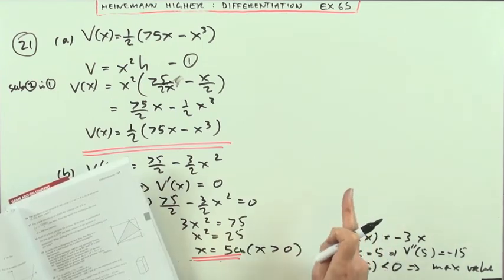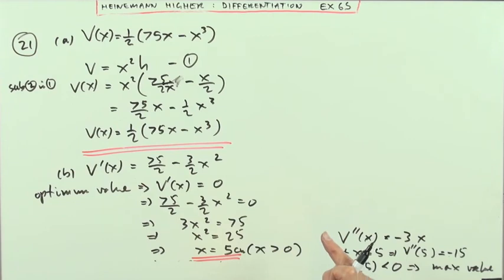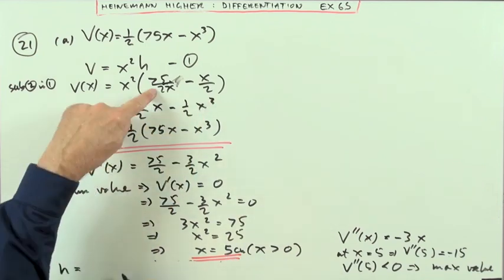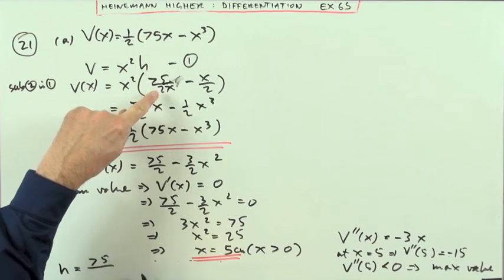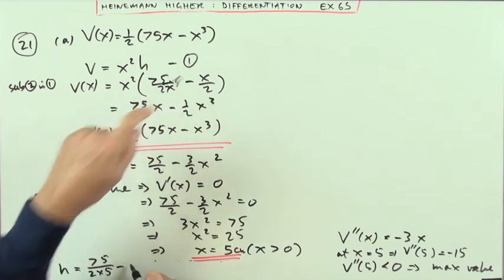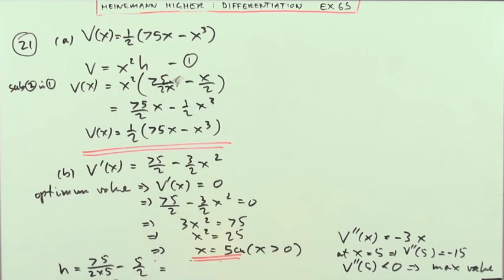Now part B actually says what's the dimensions of the block that maximize the volume, and part C says what's the maximum volume. Well that was x, that was the expression for h in there. So that means that at x equals 5, h is going to be 75 over 2 times 5 minus the 5 upon 2. So 5 into that goes 15, so you've got 15 upon 2 minus 5 upon 2, which is 10 upon 2, which is 5. There it is.